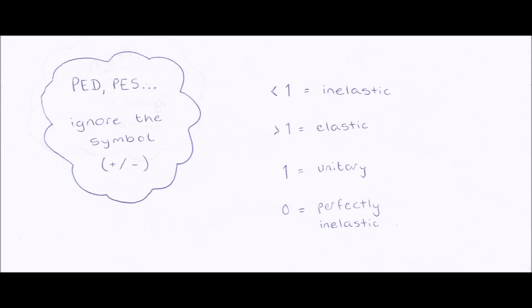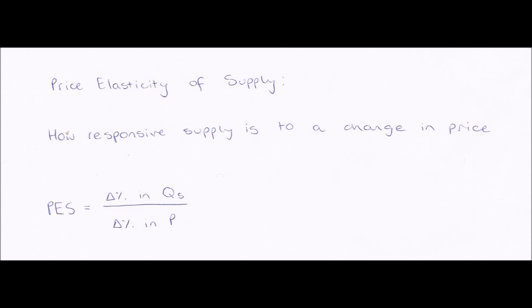Moving on to price elasticity of supply. This is the same concept but applied to supply — how responsive supply is to a change in price, that is, how much supply will change when there is a change in price. Again, we have elastic, where supply will change a lot when there's a change in price, and inelastic, where supply won't change that much. We can work it out mathematically using the formula: price elasticity of supply equals percentage change in quantity supplied divided by percentage change in price.